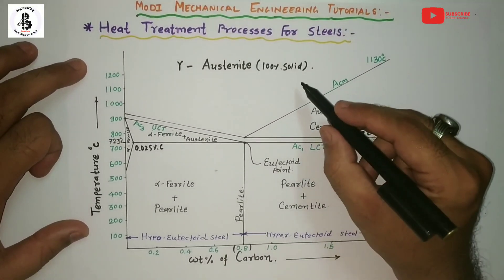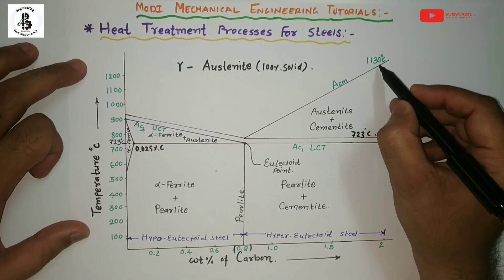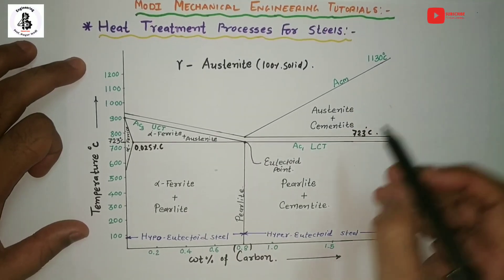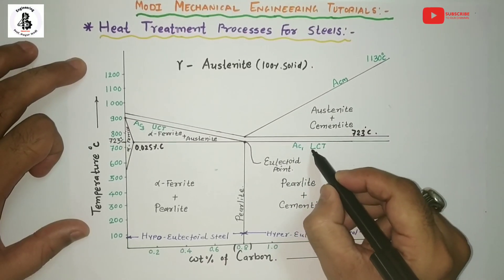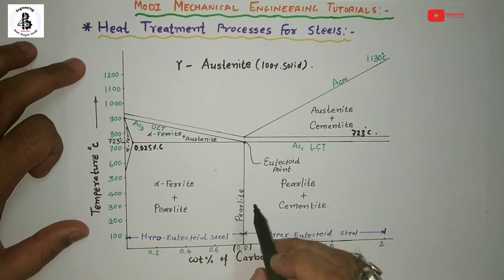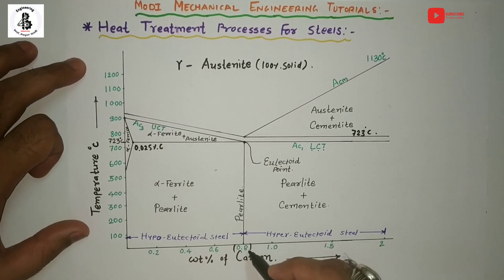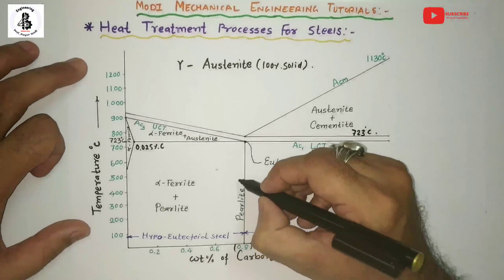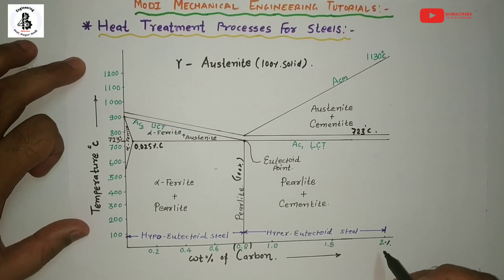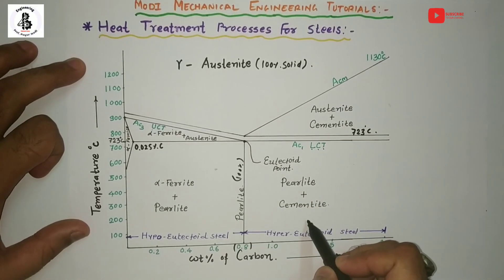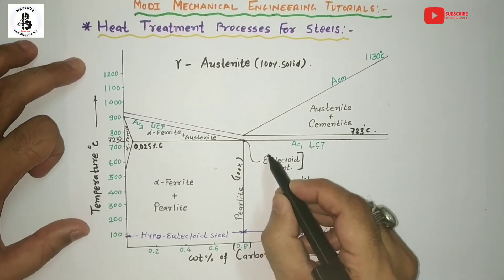There is also the ACM temperature line, at which gamma austenite starts converting into the cementite phase — around 1130°C. One more temperature line exists at around 723°C, which is the lower critical temperature line. Before 0.8% carbon, the phases formed are alpha ferrite plus pearlite. At 0.8% carbon it is 100% pearlitic structure, and from there up to 2% carbon it is pearlite plus cementite.